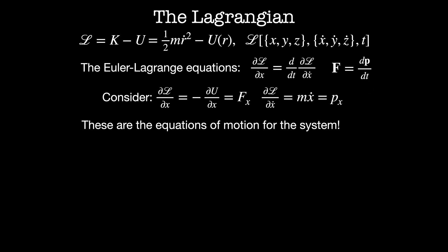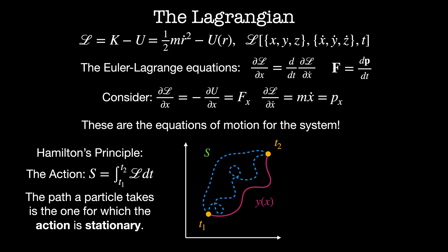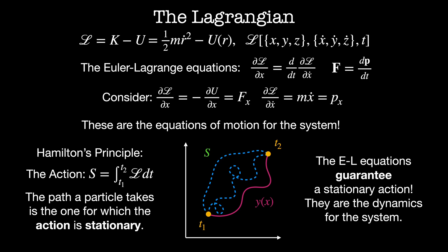This means that the Euler-Lagrange equations are the equations of motion for the system in each coordinate. Thinking about this in terms of the calculus of variations, we get the so-called Hamilton's principle. We define a quantity called the action: the integral from time t1 to t2 of the Lagrangian dt. This looks just like our i-integrals in the calculus of variations. Hamilton's principle states that the path a particle takes is the one for which the action is stationary or minimized, and the Euler-Lagrange equations are guaranteed to give us that stationary action.